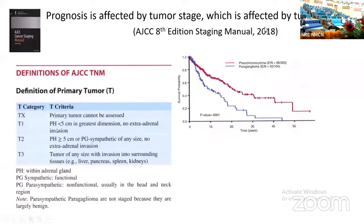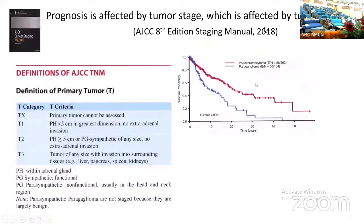A tumor is classified as T1 if it is less than 5 centimeters in greatest dimension and has no extra-adrenal invasion. It automatically becomes T2 if it is intra-adrenal measuring more than 5 centimeters, or is an extra-adrenal sympathetic paraganglioma of any size with or without extra-adrenal invasion. This reflects the greater likelihood of invasion of extra-adrenal sympathetic paragangliomas, and that sharp dichotomy between adrenal and extra-adrenal in terms of survival is shown in a Kaplan-Meier plot.